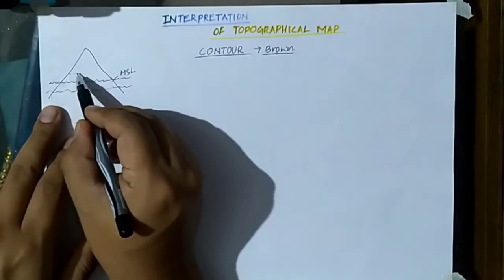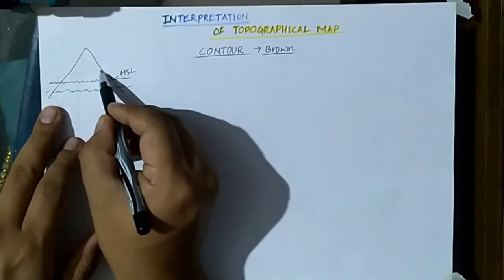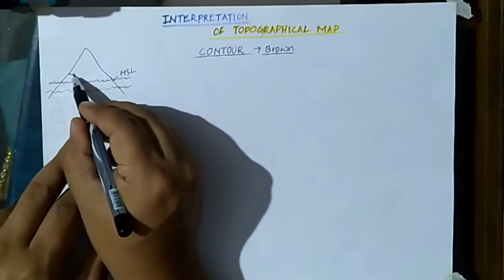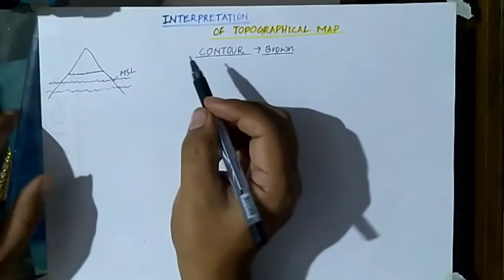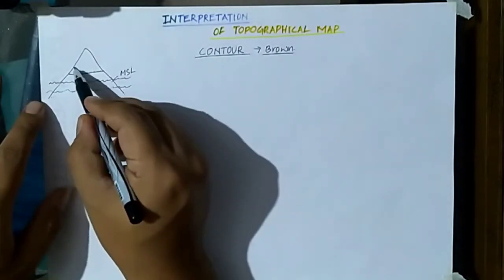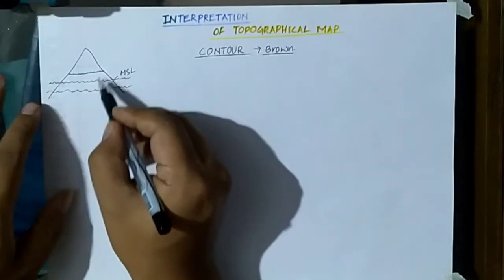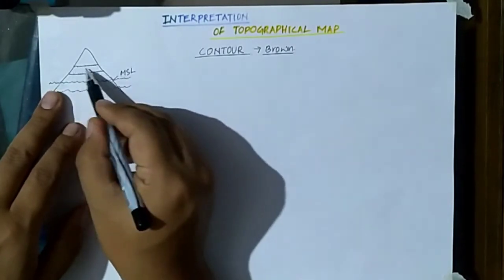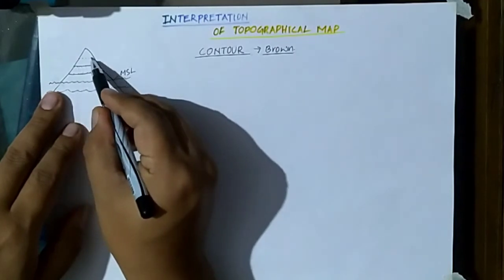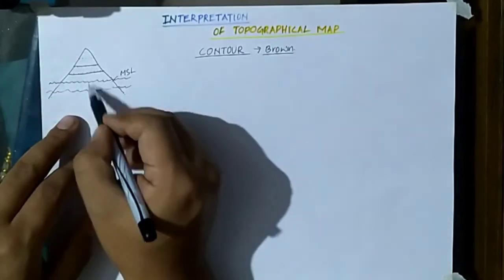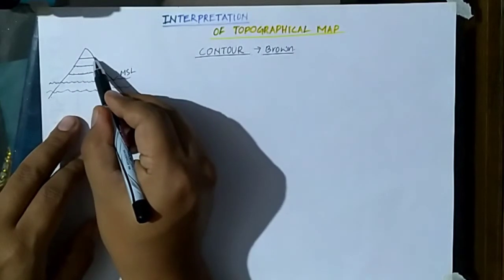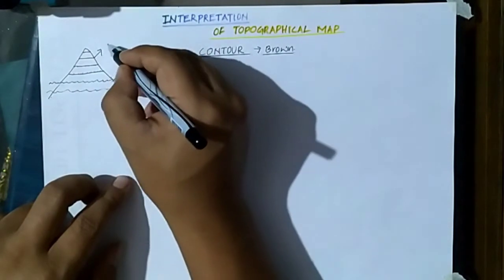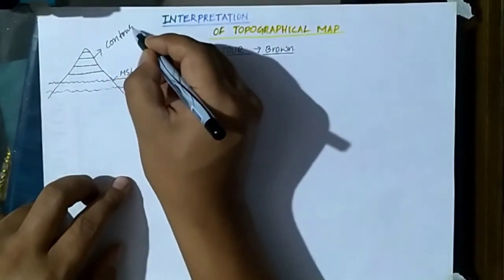Just above the mean sea level, suppose 100 meters above sea level — all the places at 100 meters will be joined by a single line. Again, places falling at 200 meters above sea level will all be joined by a line. Then all places at 300 meters will be joined by a single line, and similarly a 400-meter line will also be drawn. Those lines are termed as contour lines.